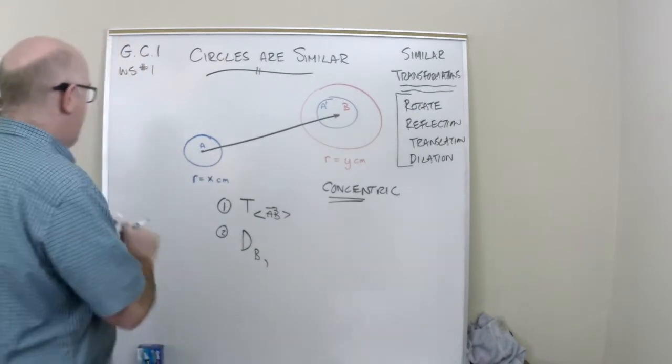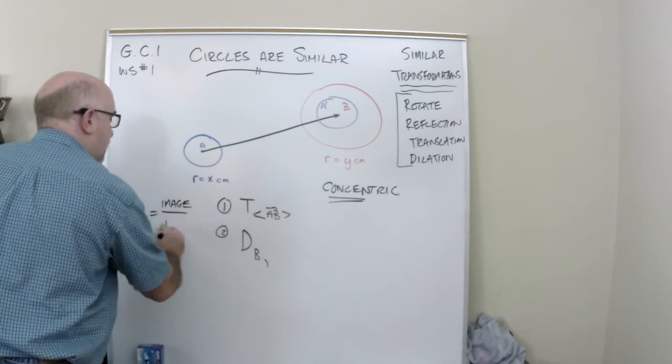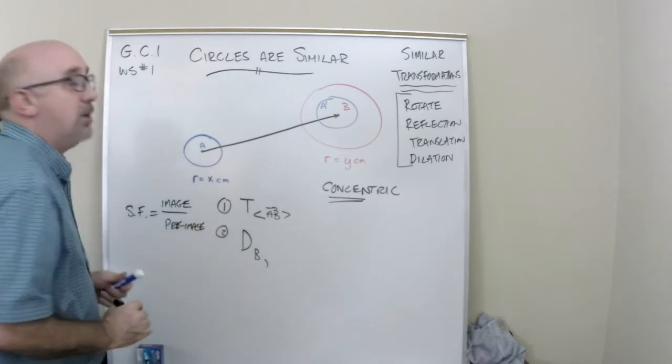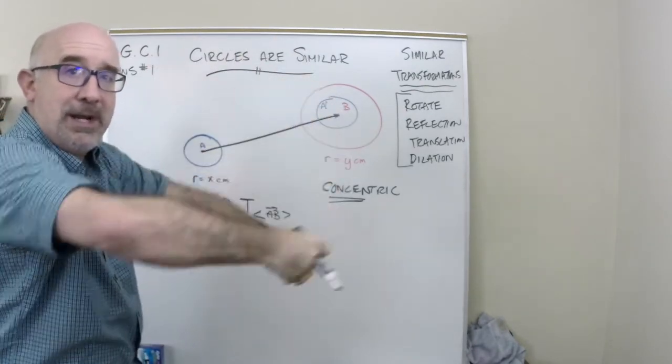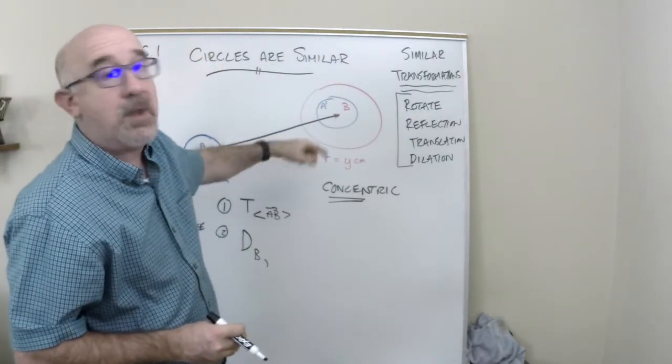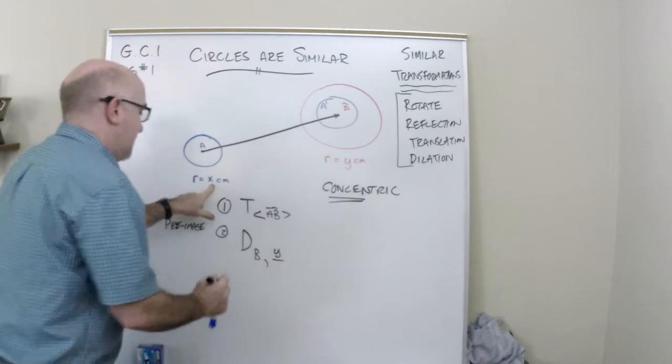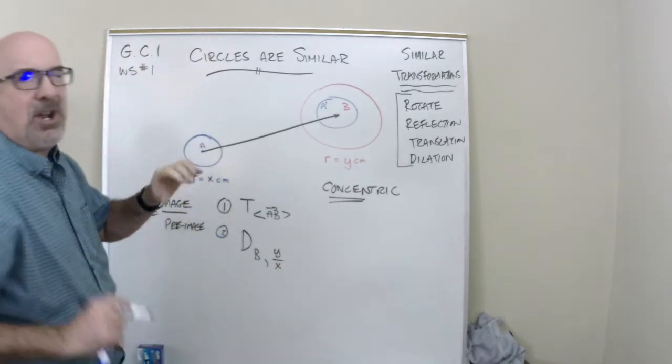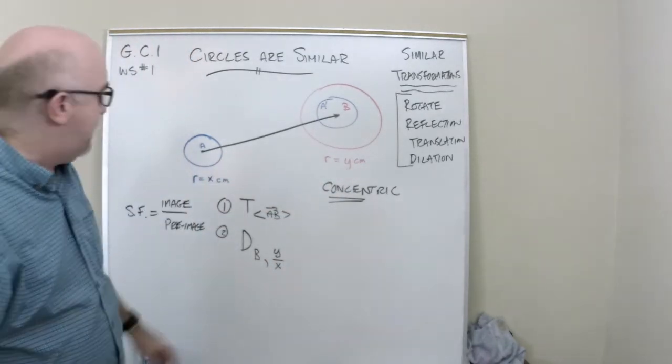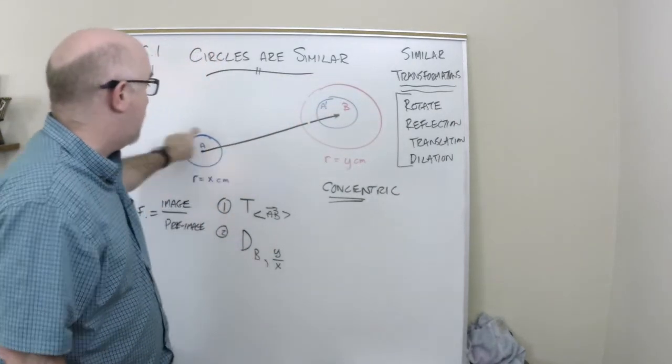A scale factor is always the image over the pre-image. And what that means to you and I is what I want to become and what I currently am. So I just slid A over here, and I want to become the red circle. So I want to become a Y value, but I'm currently an X value. So this is kind of abstract a little bit. It would have been easier if this was a four and this was a two. That would have been nice. But the point is, it's always the image value, whatever you want it to become, divided by what you currently are.